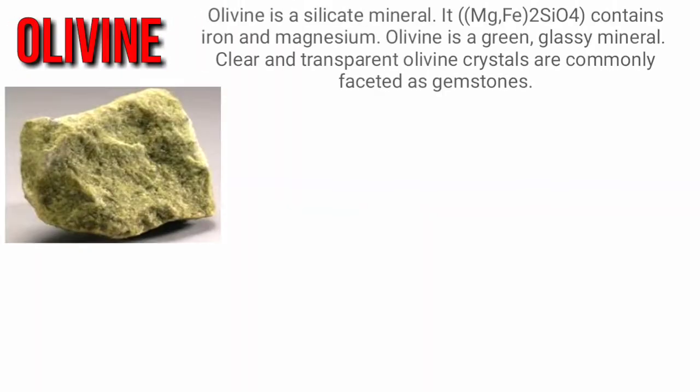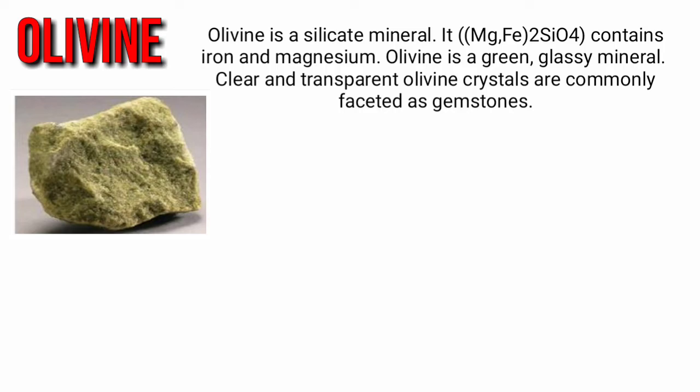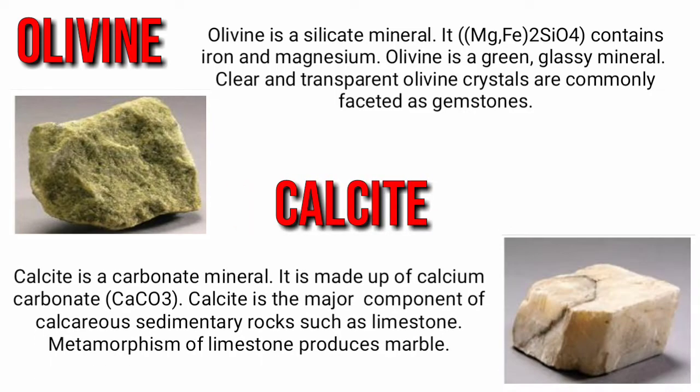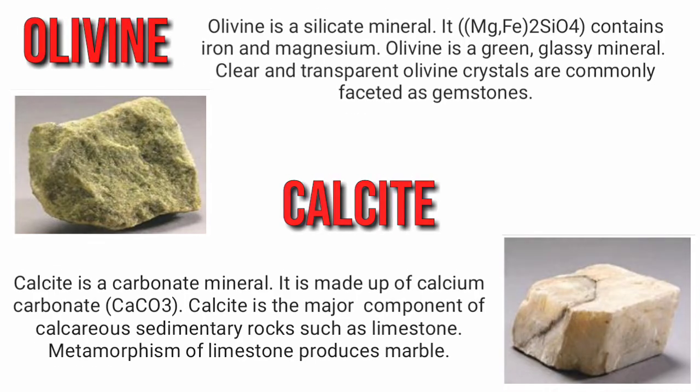Next is olivine, a silicate mineral. Clear and transparent olivine crystals are commonly faceted as gemstones. Last is calcite. Calcite is the major component of calcareous sedimentary rock such as limestone. Metamorphic processes produce marble.